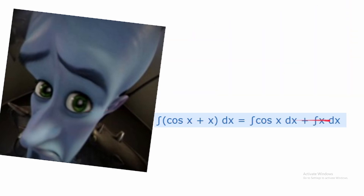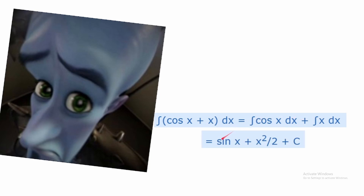Now let's try to integrate the function: integral of cos(x) plus x dx. The first step is to split this up into two integrals — the integral of cos(x) dx and the integral of x dx. You know that the derivative of sin(x) is cos(x), so therefore the integral of cos(x) is sin(x). And then x becomes x²/2, and don't forget the plus C. Pretty straightforward.